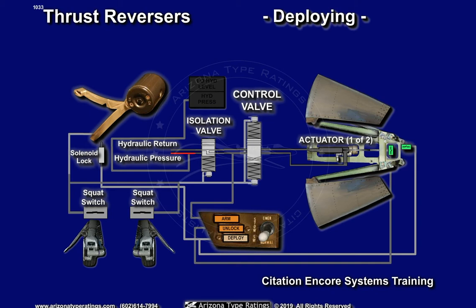The hydraulic bypass valve is powered closed, pressurizing the hydraulic power system. The hydraulic pressure on light will illuminate to indicate that the hydraulic system has been activated. The isolation valve is powered open, connecting the reverser plumbing to hydraulic pressure. The arm enunciator is illuminated, indicating hydraulic pressure in the reverser feed.